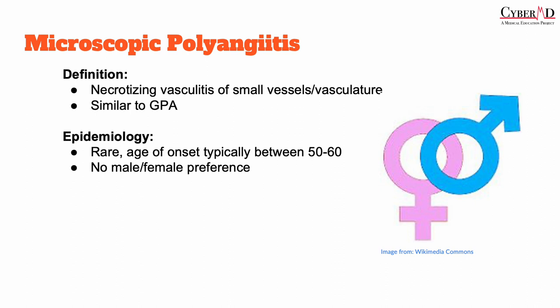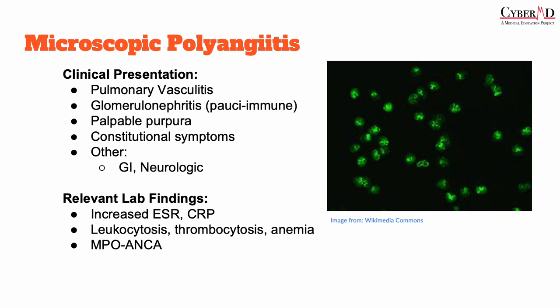Microscopic polyangiitis is a relatively rare condition with average onset between 50 and 60 years of age. The typical clinical features include pulmonary vasculitis, pauci-immune glomerulonephritis, and palpable purpura. Pauci-immune indicates the relative lack of immunoglobulin and complement deposition within the kidney, as demonstrated by indirect immunofluorescent techniques. Palpable purpura are visible, non-blanching hemorrhages that are raised and able to be felt upon palpation. Patients may also present with constitutional symptoms such as weight loss, fever, and fatigue, as well as abdominal pain and neurological symptoms such as mononeuritis multiplex or symmetric polyneuropathy.